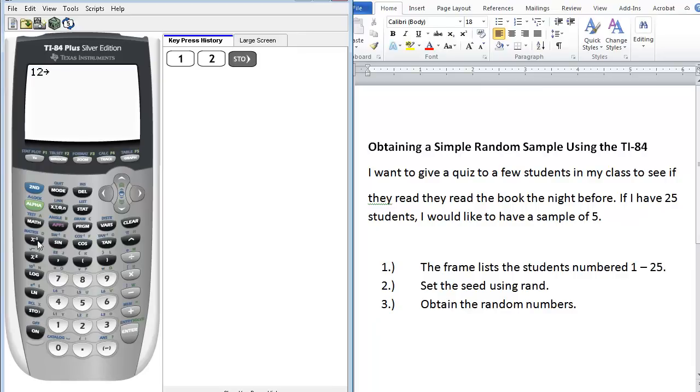Then we want the rand function. So we go to the math button, scroll over to get to PRB for probability, and there is our first option, rand. We press enter to select it, and then we press enter again to complete that assignment.